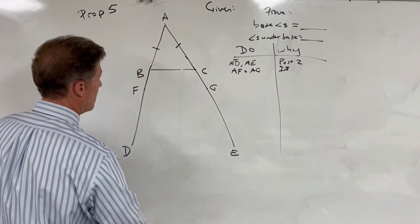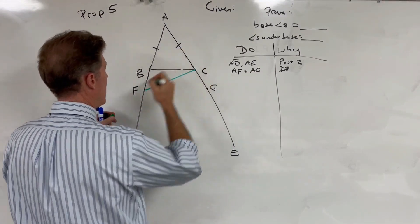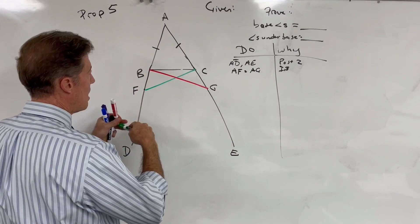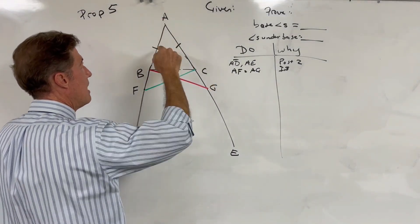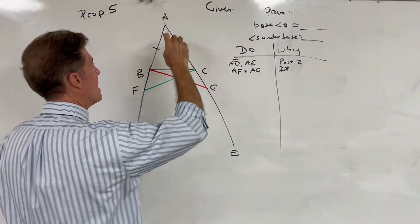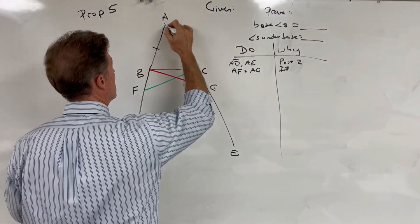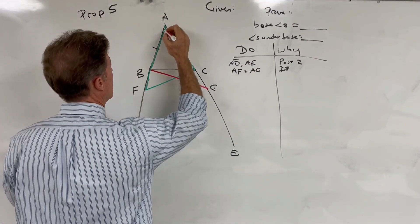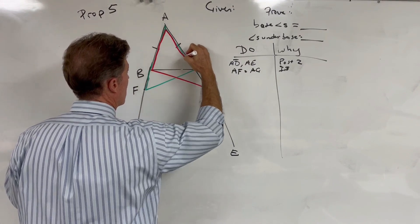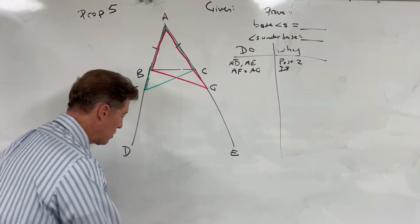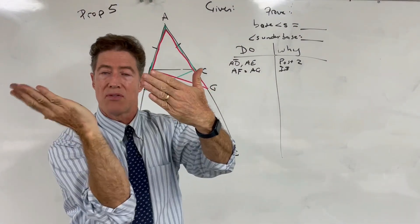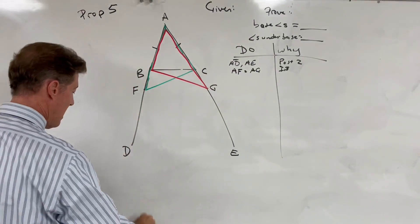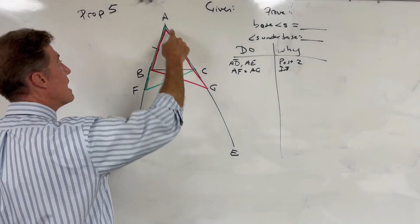Now we're going to join these up and use different colors to make it clearer. We now have two triangles: triangle ABG and triangle ACF. I'm going to highlight those in different colors so they stand out. We have this triangle in green and another triangle in red. You should notice that unlike some triangles we've seen before, one of them is flipped — it's a mirror image — and then it's overlapped. So the green triangle is overlapped with the red triangle.